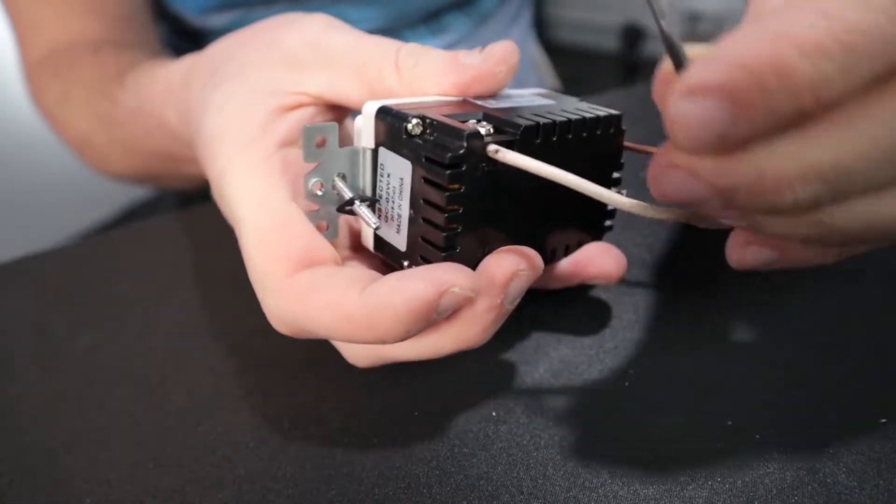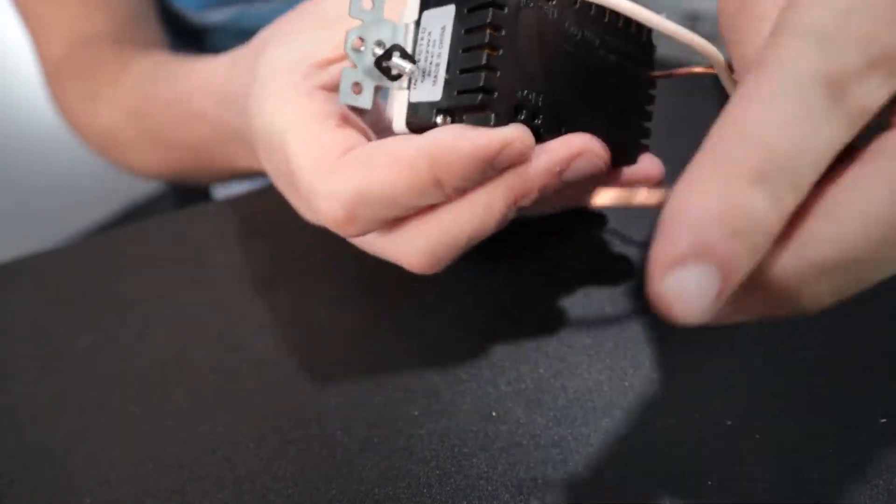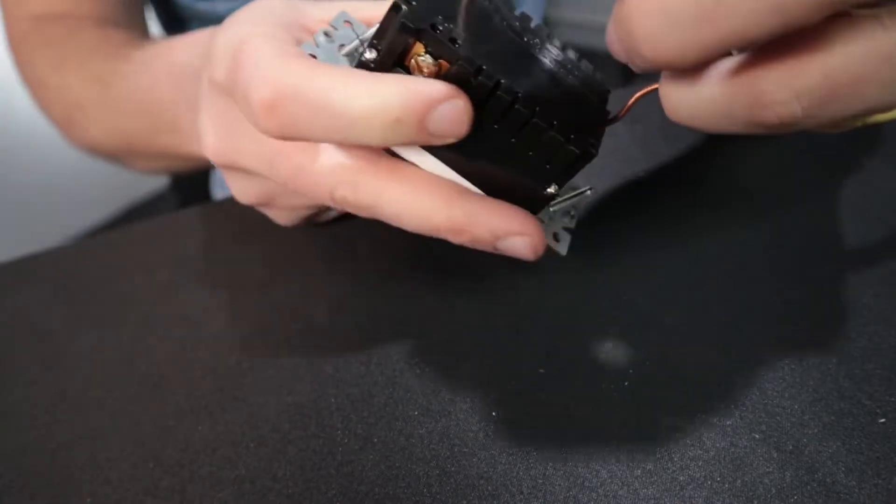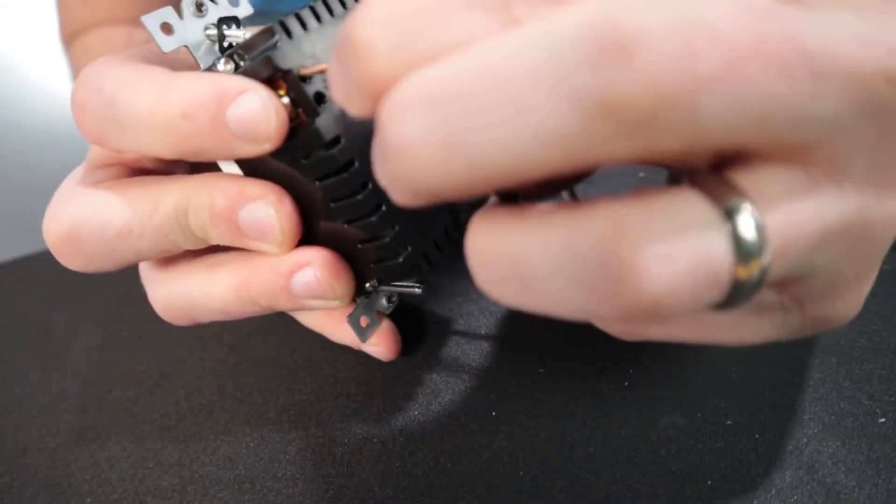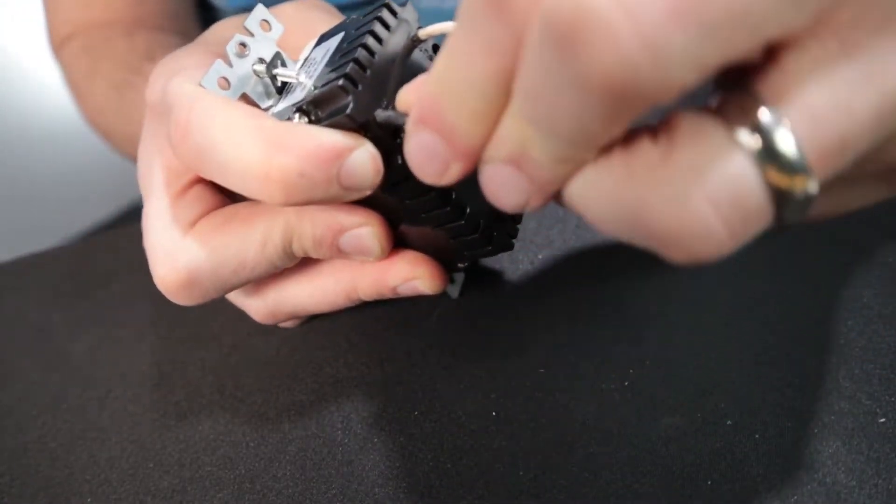And then the last one we're going to install is this black wire, our hot wire. And to do that, we'll just do the same thing. So we come over here, we just stick it in there and then we'll tighten that screw right there.